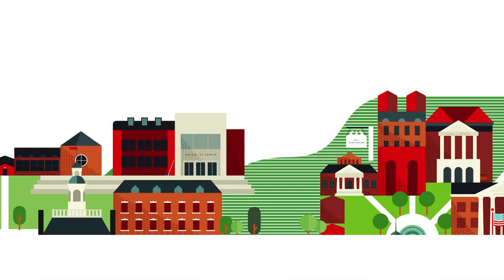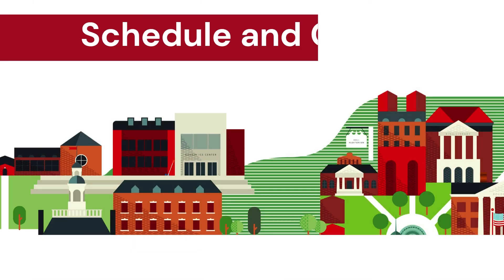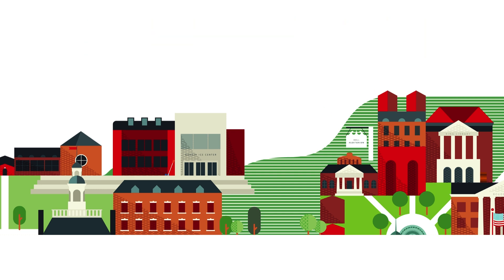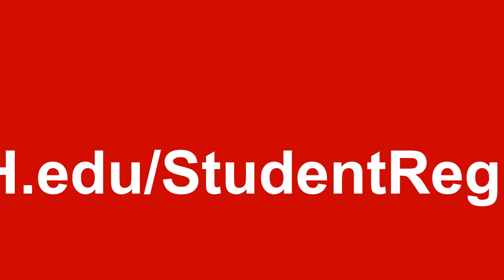Once you have registered for classes, the Schedule and Options tab can come in very handy. You can learn about courses after you make your class selections. You can also elect to change your grade option on eligible courses, but we'll go over that in another video. In this video, we're going to walk through those features.